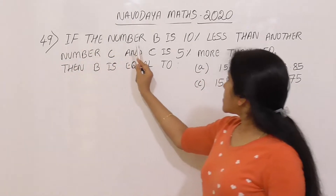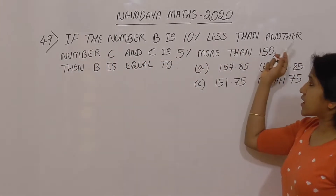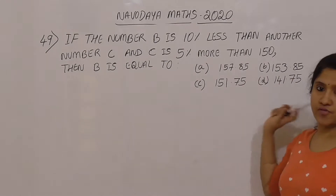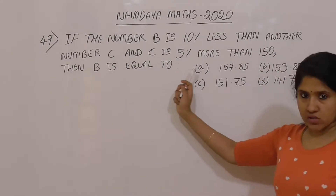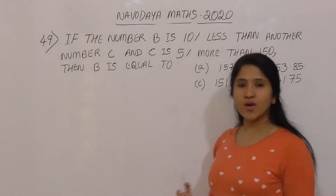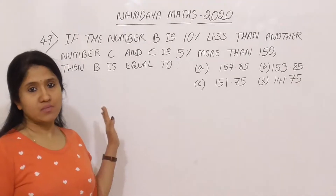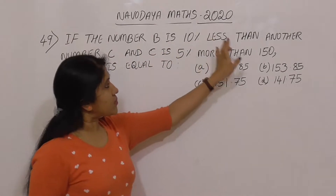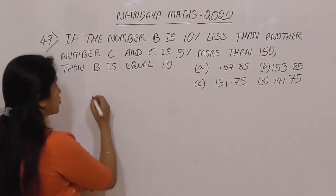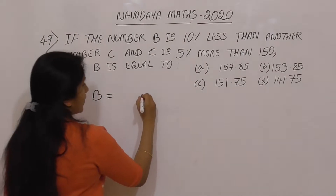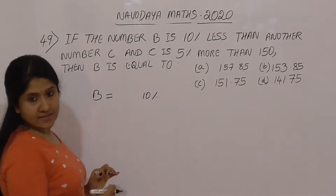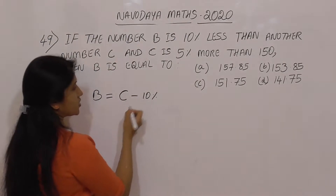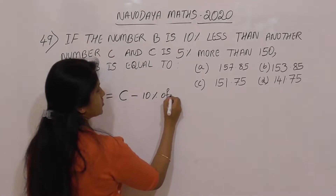If the number B is 10% less than another number C, and C is 5% more than 150, then B is equal to what? Let's solve this step by step with a simple line-by-line method. B is 10% less than C, meaning B is less than 10% of C.